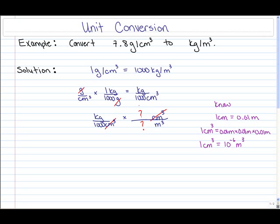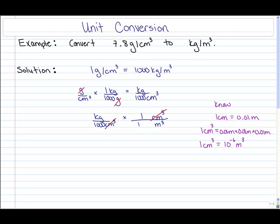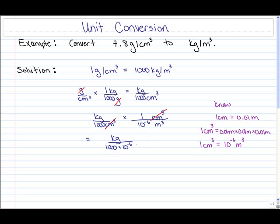Now that we know that, we can fill in our question marks. The first question mark in the numerator is replaced with 1, and the second question mark in the denominator is replaced with 10 to the negative 6. When we multiply through, the cubic centimeters cancel out and we get 1 kilogram in the numerator, and in the denominator we have 1,000 times 10 to the negative 6 meters cubed.